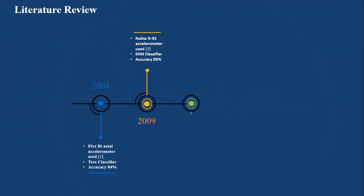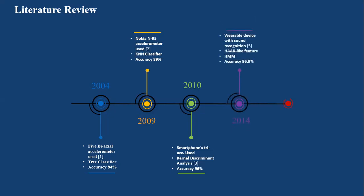Literature Review: I am going to discuss how the previous work was done in past years which were related to our project. In 2004, researchers acquired data from 20 subjects by using five bi-axial accelerometers. They used three classifiers to achieve 84 percent accuracy by using mean energy entropy features. In 2009, Nokia 95 accelerometer was used with a classifier and they achieved accuracy of 89 percent.